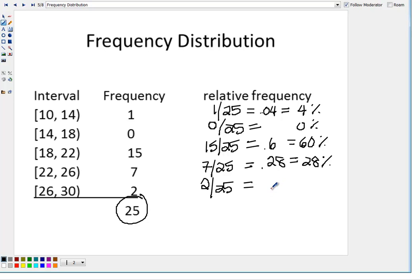And then the last one would be 2 out of 25. When we divide that out, you get 0.08, which is 8%.